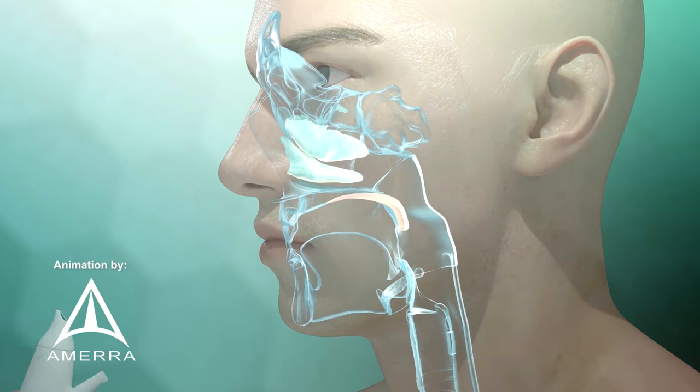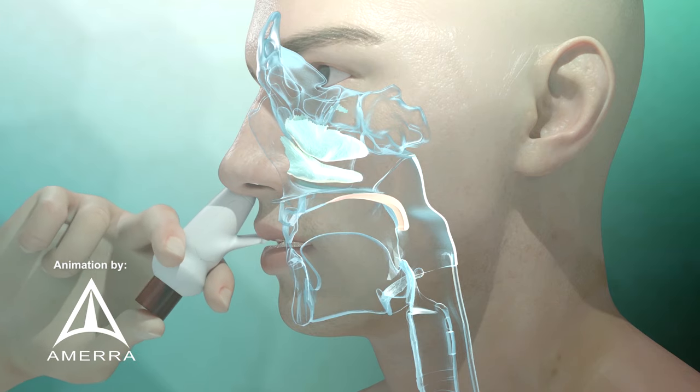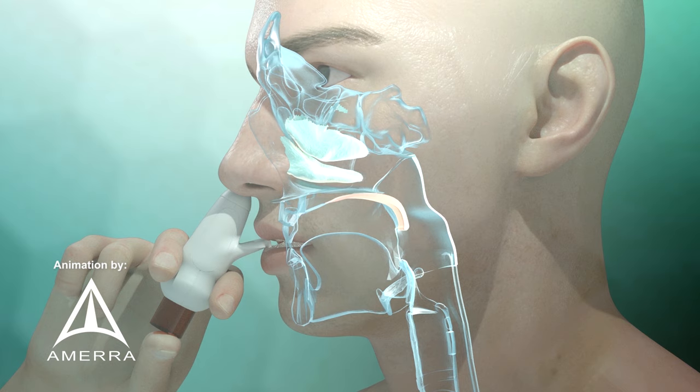In the exhalation delivery system with fluticasone, the nose piece seals tightly in the nostril, acts as a stent to open the nasal valve, and transfers pressure from the lungs and mouth to the nose and sinuses.